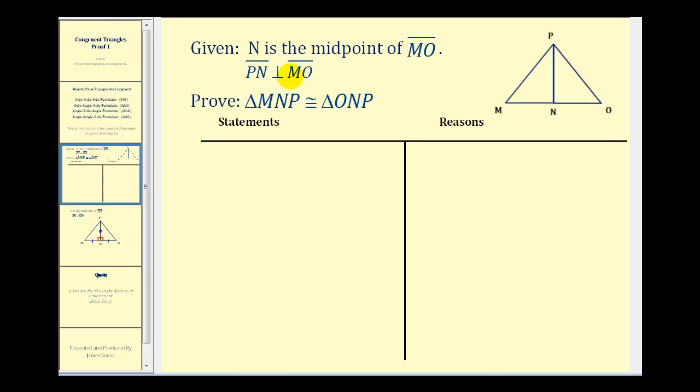So step one, we'll state the given. N is the midpoint of segment MO and segment PN is perpendicular to segment MO. This is given.